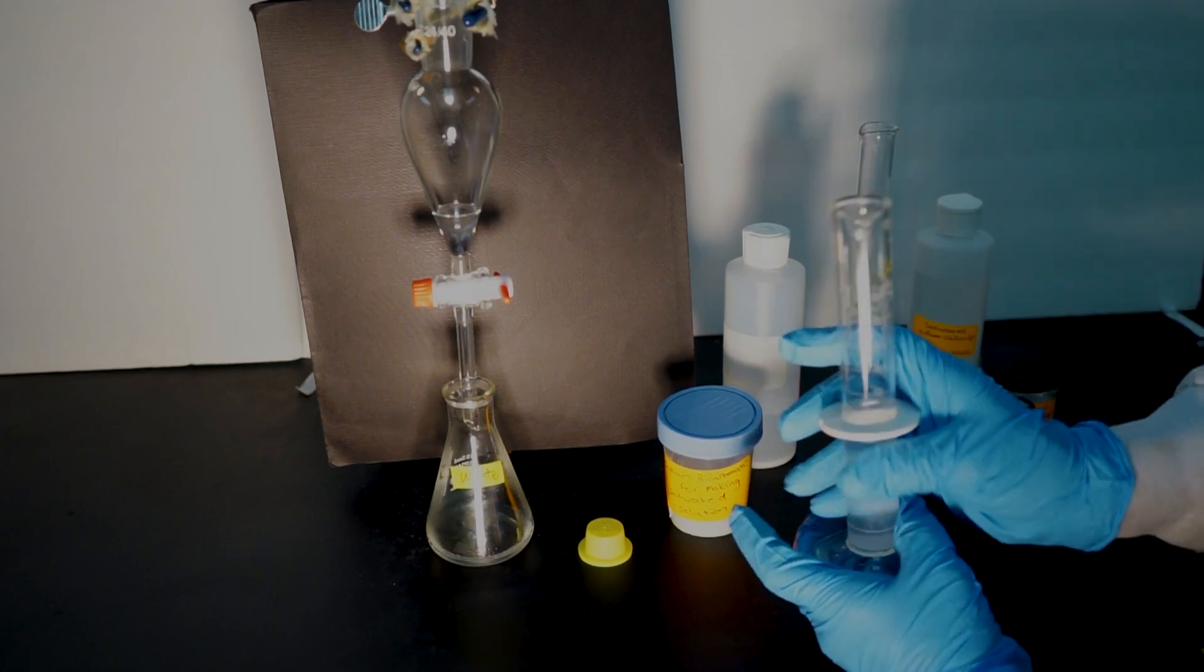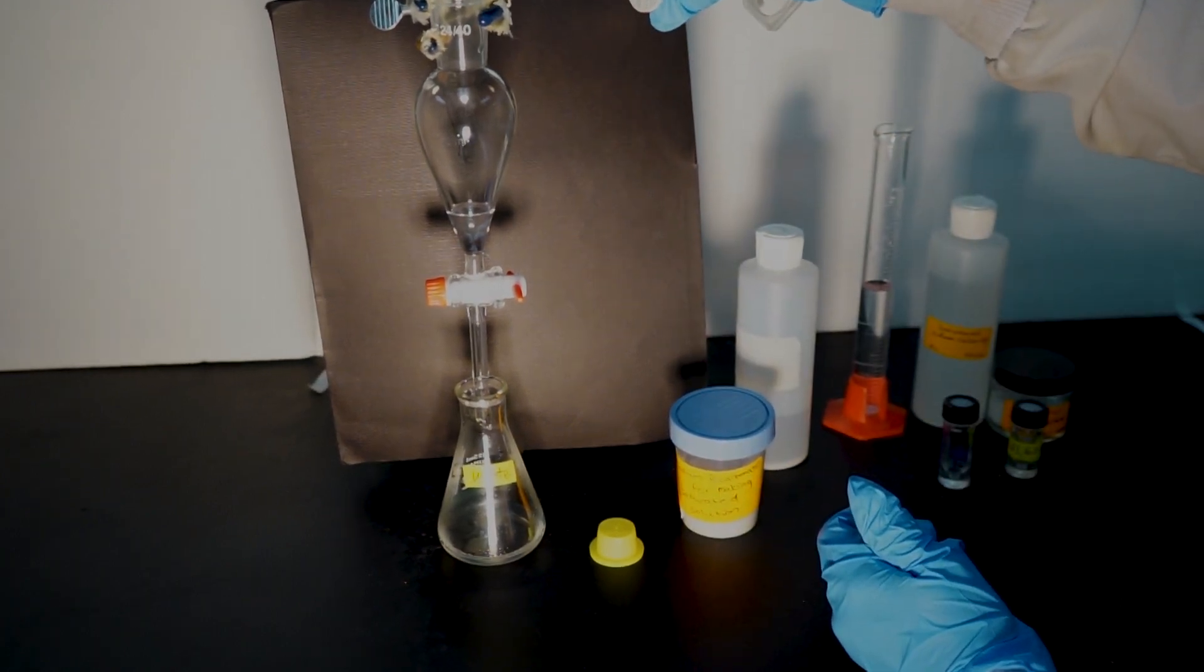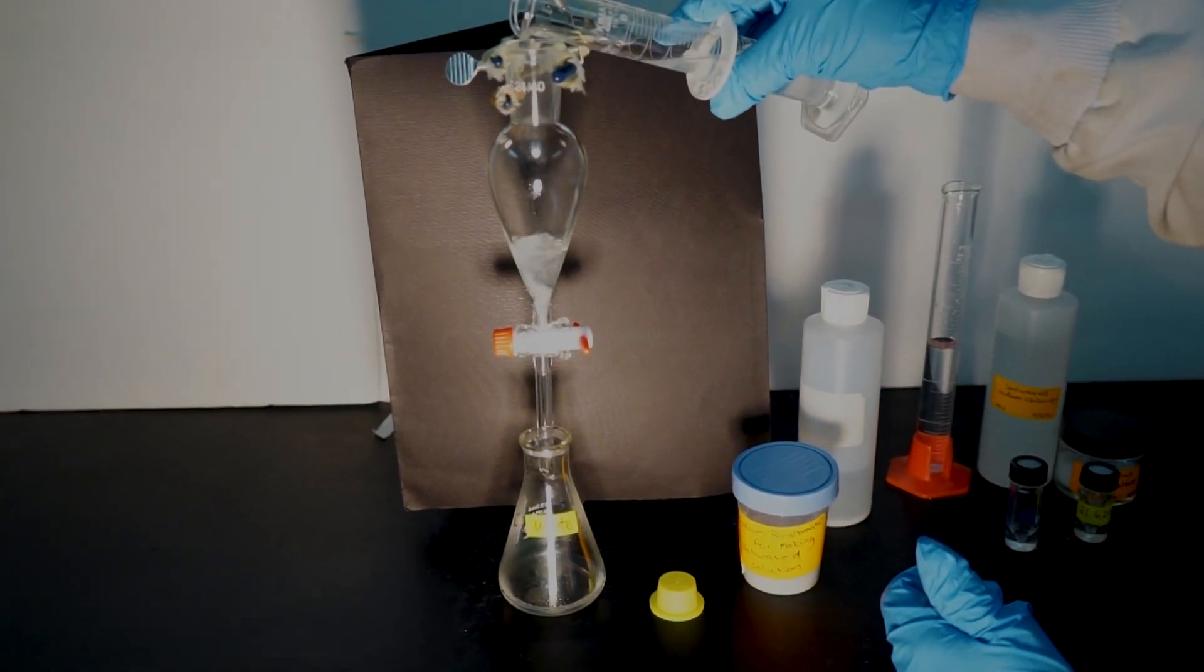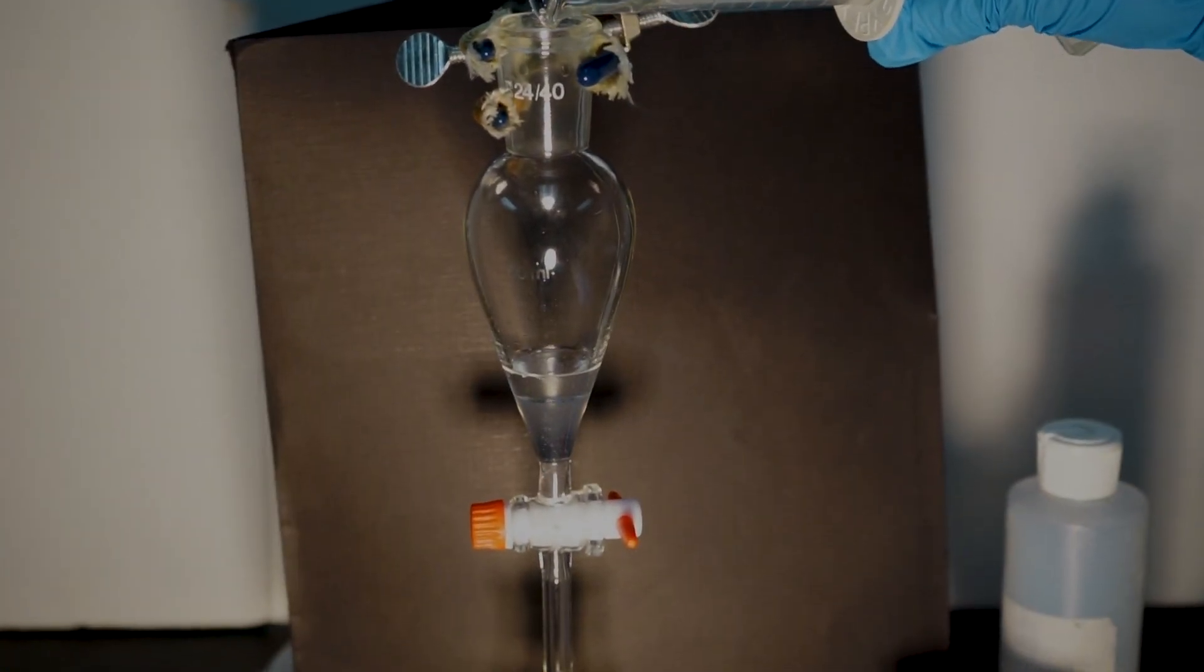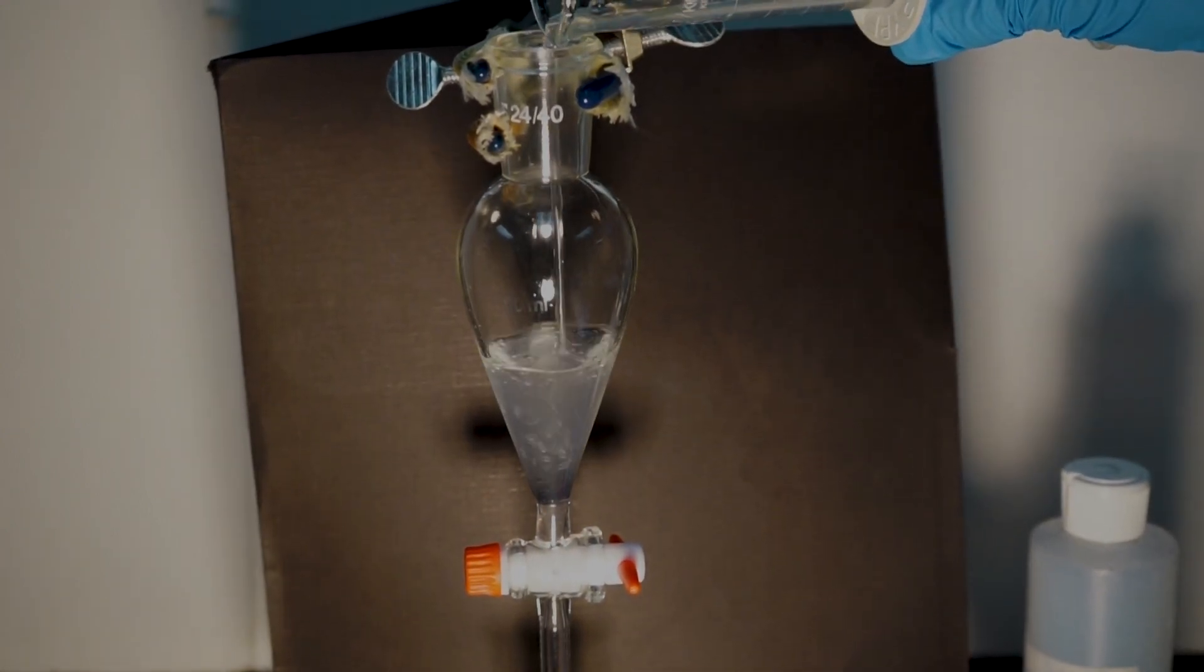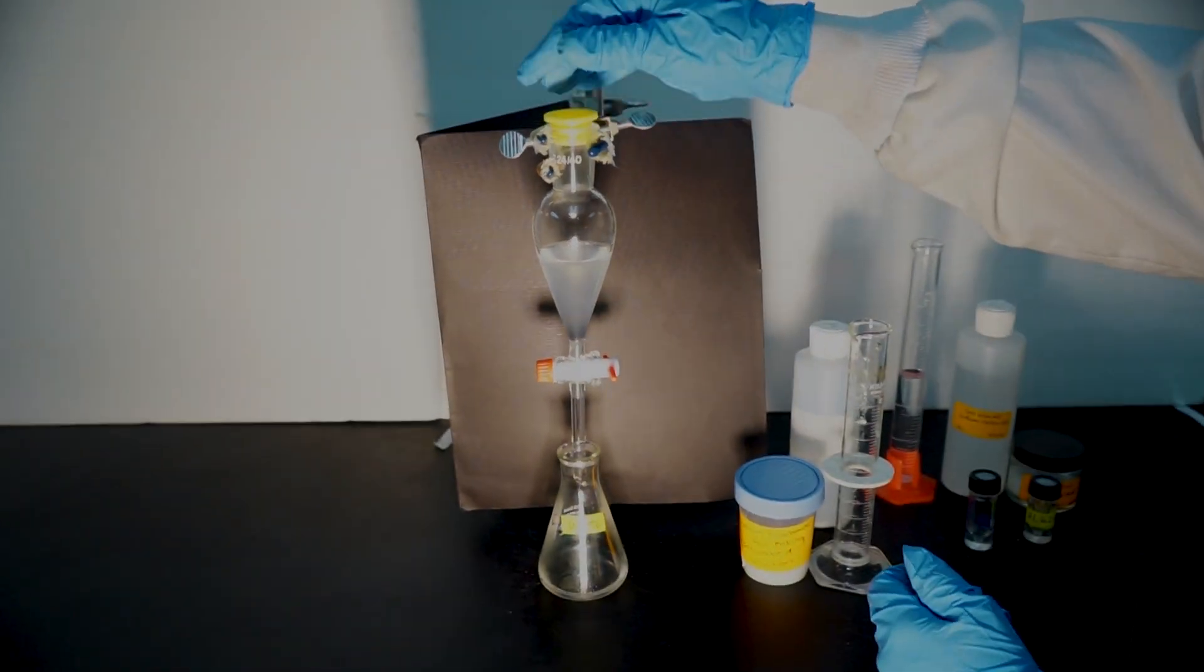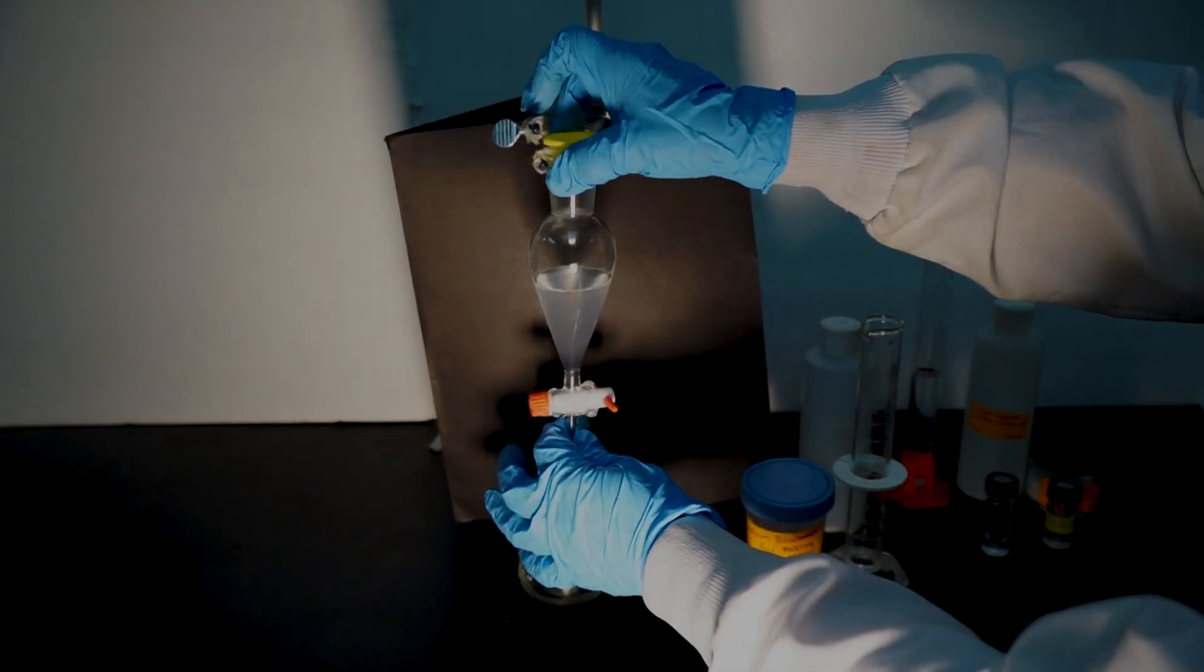The first wash will be with saturated sodium bicarbonate solution. You will notice that it bubbles with this addition. That's just the sodium bicarbonate reacting with any leftover hydrochloric acid. This means you should add it slowly at first, so it does not react too vigorously and splash out of the top of the flask. You should see two layers form again when adding this washing step.